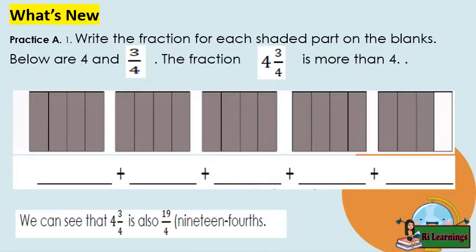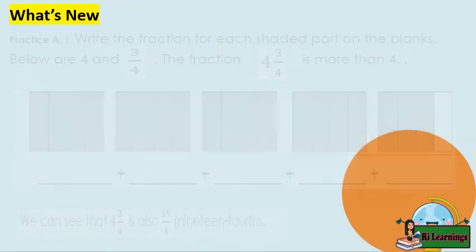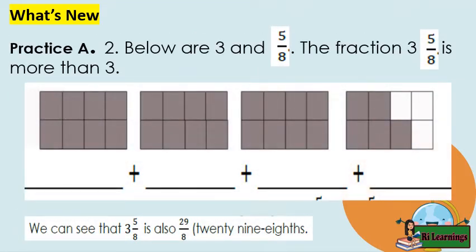Practice A, number 1: write the fraction for each shaded part on the blanks. Below are four and three fourths. The fraction four and three fourths is more than four. We can see that four and three fourths is also nineteen fourths. Practice A, number 2: below are three and five eighths. The fraction three and five eighths is more than three. We can see that three and five eighths is also twenty-nine eighths.